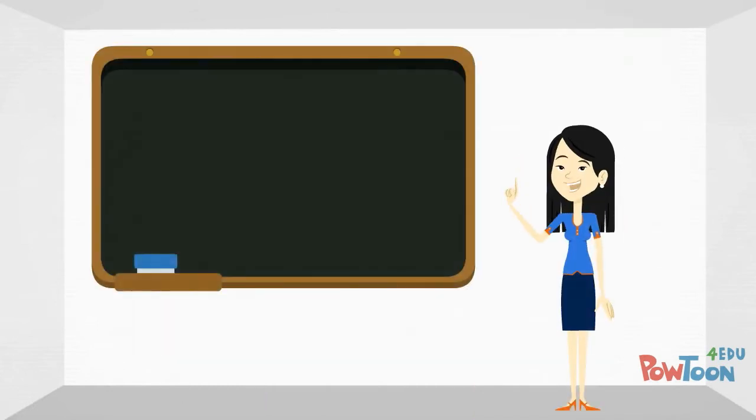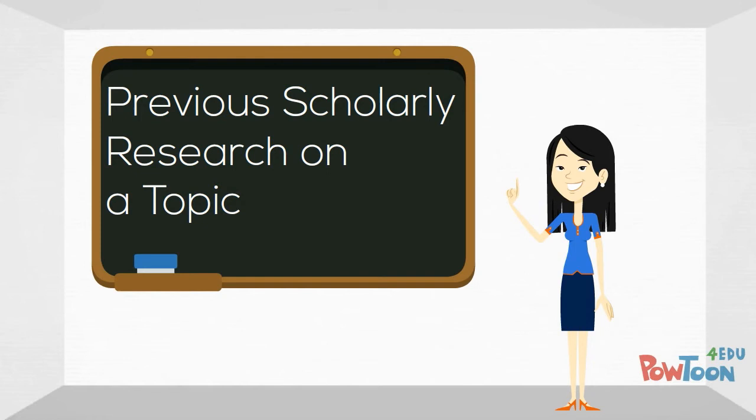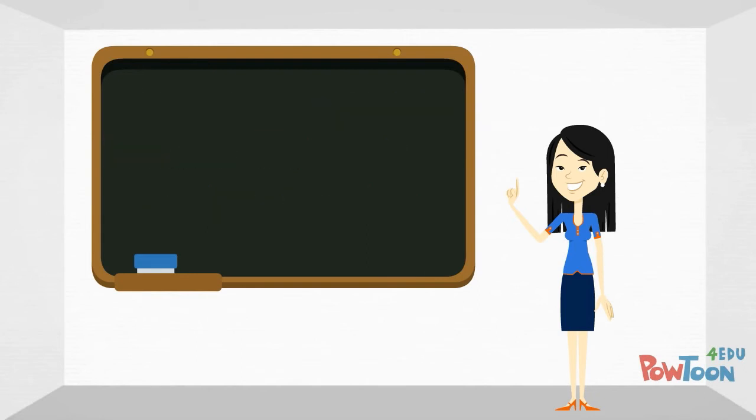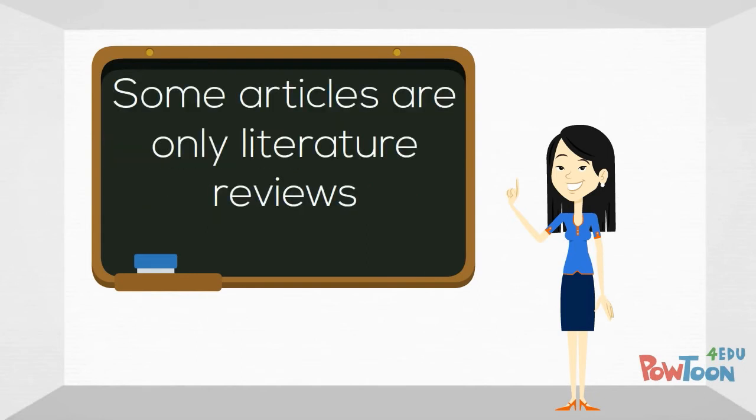To sum up, in the academic world, 'literature' is a term often used to refer to all of the previous scholarly research on a topic. Research papers usually include a literature review section, and in some cases an author may publish an article that is only a literature review.